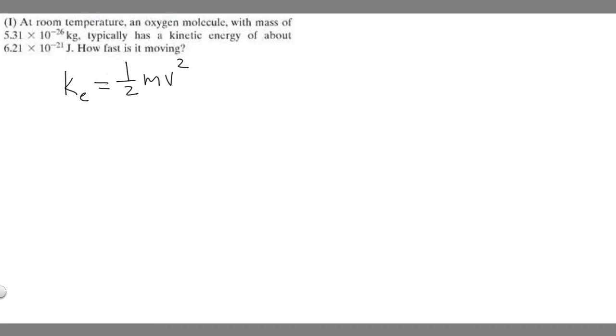What we're going to do is solve this formula for V, and then we're just going to plug in the values. They tell us it has a kinetic energy of this right here, and they tell us the mass. So essentially, all we got to do is solve for V.